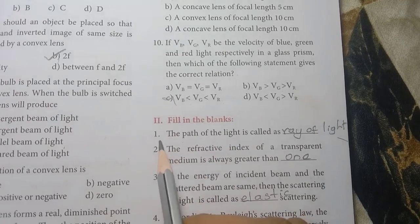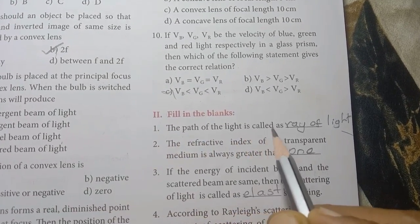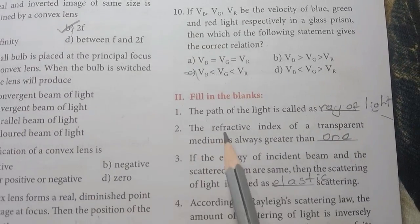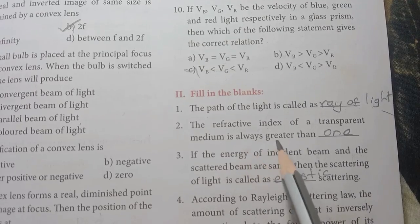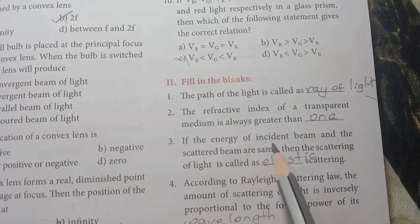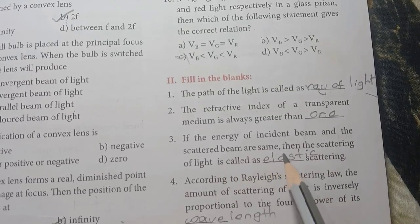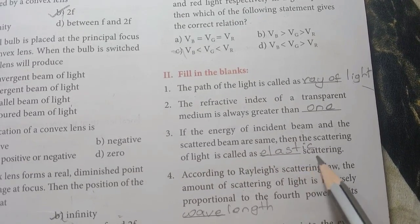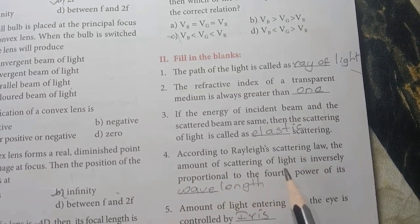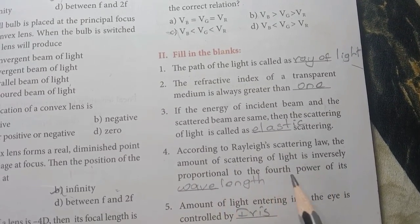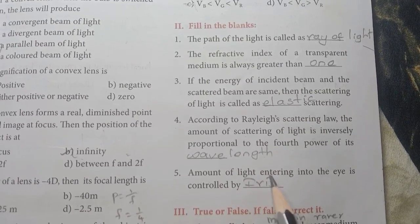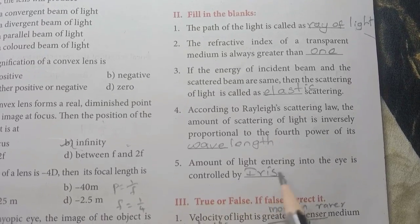Roman number 2, fill in the blanks. First: the path of light is called a ray of light. Second: the refractive index of a transparent medium is always greater than 1. Third: if the energy of incident beam and the scattered beam are the same, the scattering of light is called elastic scattering. Fourth: according to Rayleigh's scattering law, the amount of scattering of light is inversely proportional to the fourth power of its wavelength. Fifth: the amount of light entering the eye is controlled by the iris.